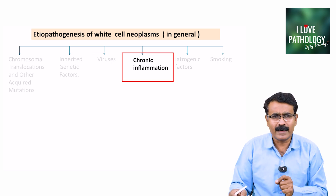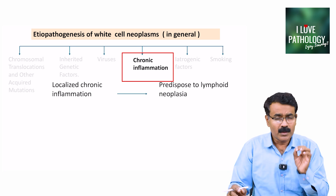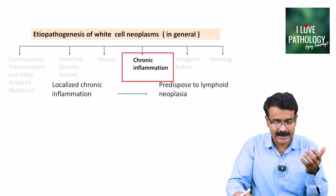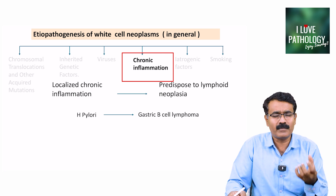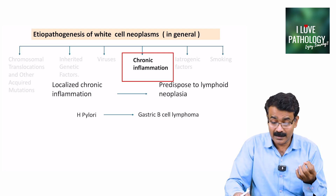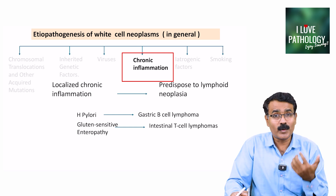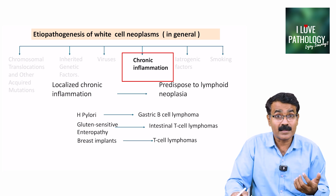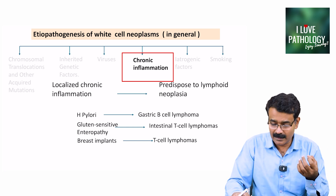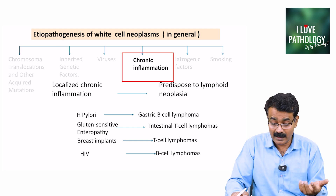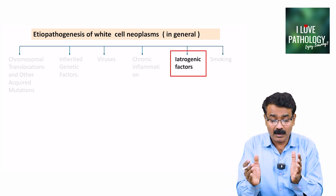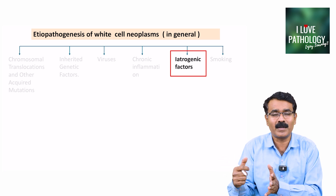Another important risk factor is chronic inflammation. Localized chronic inflammation can predispose to neoplastic processes, particularly lymphoid neoplasms. For example, H. pylori in the gastric mucosa can result in gastric B cell lymphoma. Gluten-sensitive enteropathy increases risk of intestinal T cell lymphomas. Breast implants, due to the chronic inflammatory process surrounding them, can predispose to T cell lymphomas. HIV-infected individuals also have increased risk of B cell lymphomas.